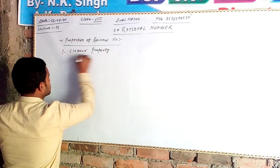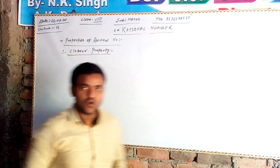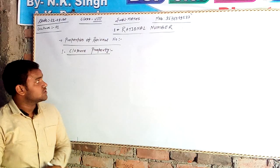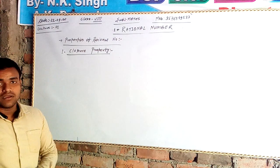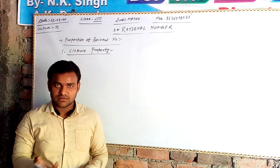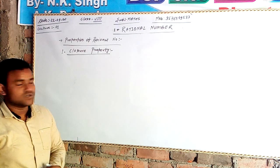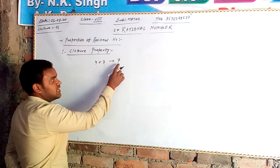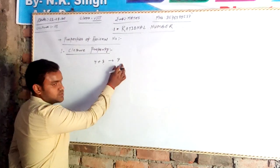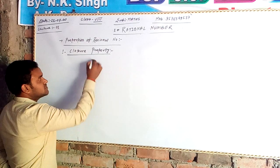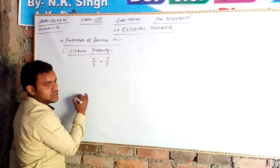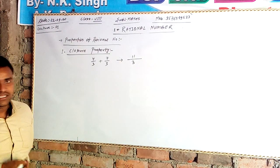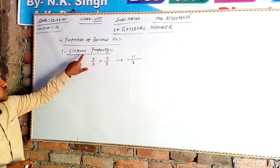Closure property says that if two numbers are added, the result is also of the same type. For example, the sum of two natural numbers is always a natural number — like 4 plus 3 gives 7, where 4, 3, and 7 are all natural numbers. Similarly, for rational numbers, 4 by 3 plus 7 by 3 gives 11 by 3, which is also a rational number. So rational numbers show closure property over addition.